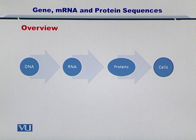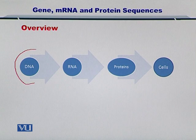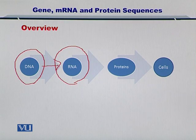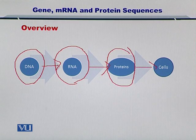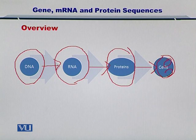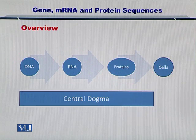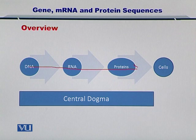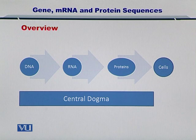Let's take a look at how this information is transferred. As you can see here, the DNA is encoding for an RNA. And the RNA is encoding for the proteins. The proteins form the cells, the membrane of the cell, the organelles within each cell, and the other signaling molecules between the cells. This is termed the central dogma. The flow of information from DNA to RNA to proteins is defined as the central dogma.